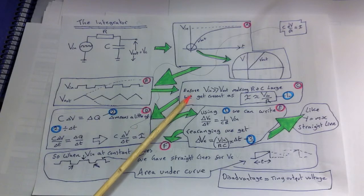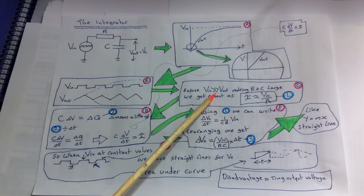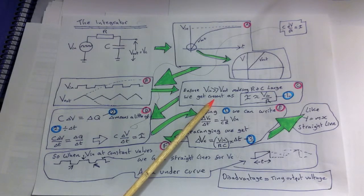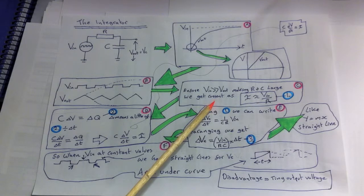If we ensure that Vin is much greater than Vc by making the resistor very large, then we're also approximating that the current I through whole circuit is as follows.